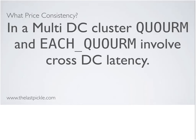There is a price to be paid for consistency. In a multi-data center environment, using quorum or each-quorum consistency levels introduces cross-data center latency into the request path. Some people, when they first come to Cassandra, are comfortable with strong consistency — it's the model from relational databases. But as they get into Cassandra projects, many discover they can live with a little eventual consistency in some places, and practically, reducing the consistency level still achieves quite a good level of consistency.